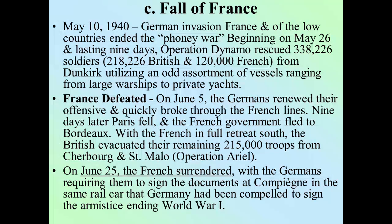On June 25th, France finally surrenders. The Germans required them to sign the documents in Compiègne — in the same rail car that Germany had been compelled to sign the armistice ending World War I. So basically, to add insult to injury, where Germany had to sign their defeat papers, they made the French sign in the exact same place, just to insult them.